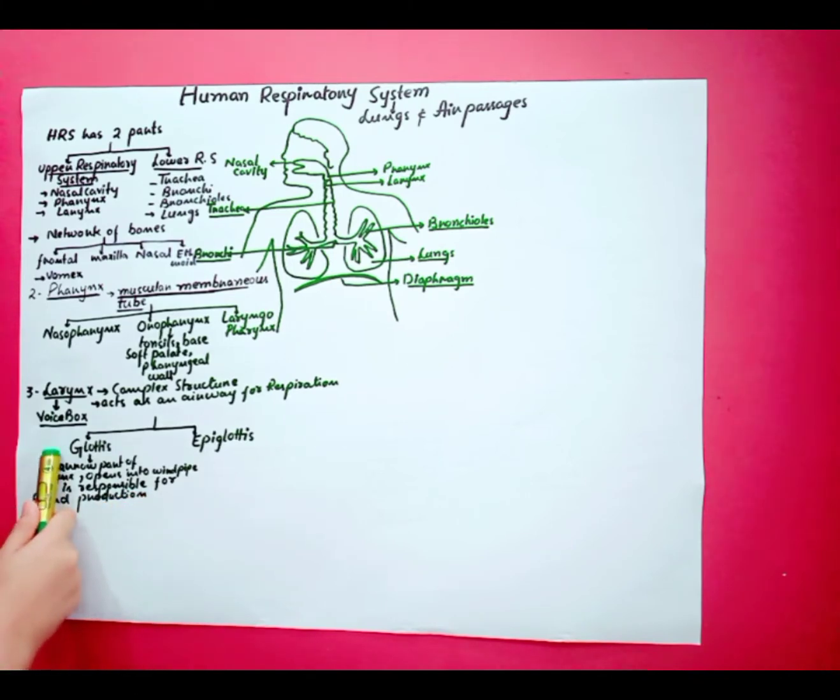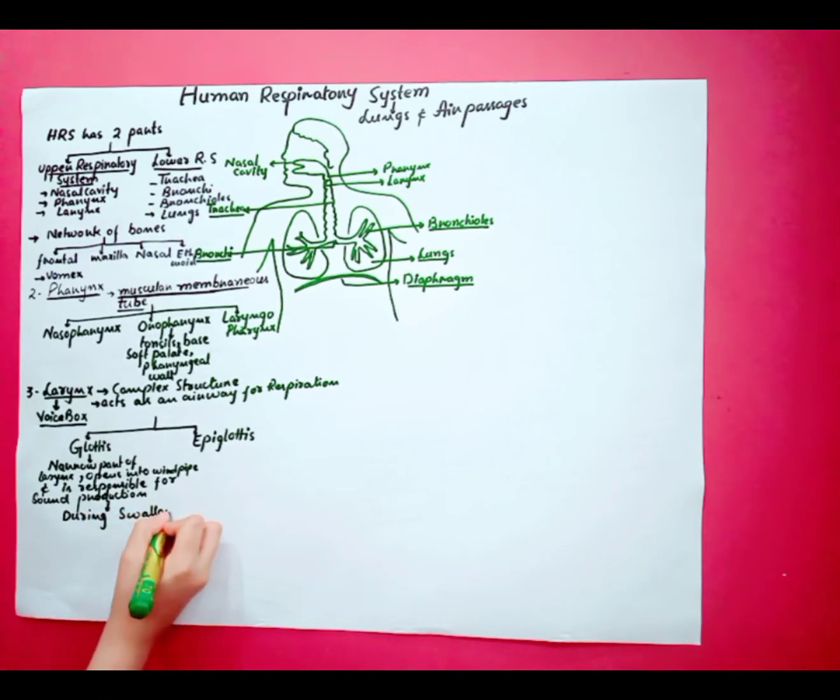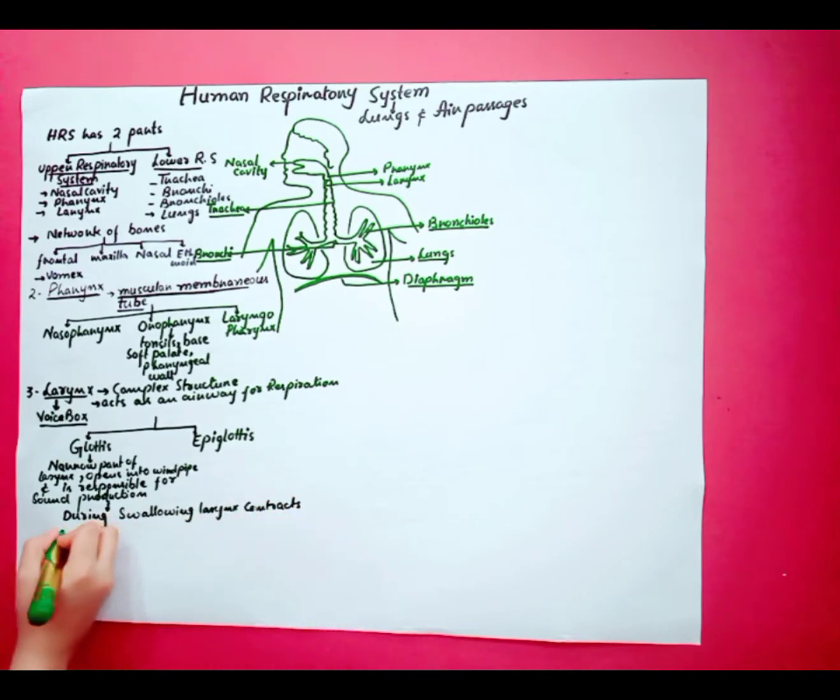During swallowing or deglutination, the larynx muscles contract and cause the upward movement of glottis and downward movement of epiglottis.